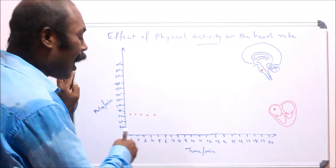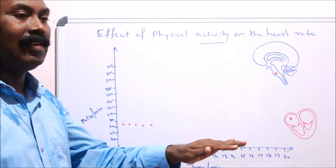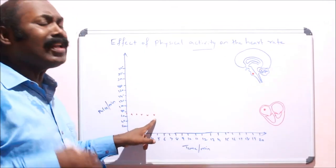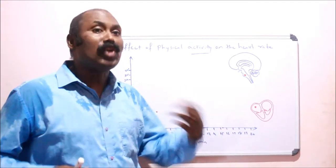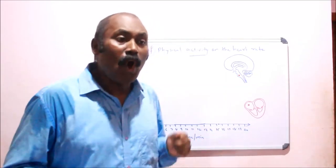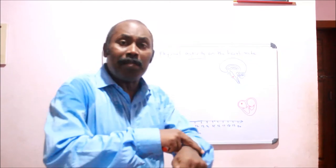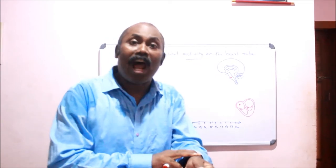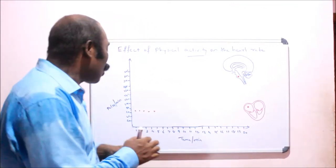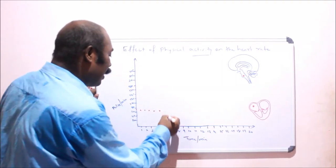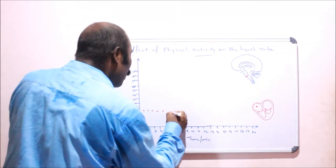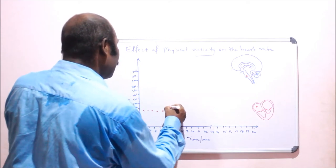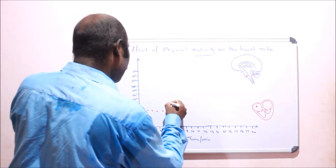After the fifth minute, you do on-spot jogging. After every minute of jogging, you check your pulse by placing three fingers of one hand on the radial artery of the other hand. You can see that from the sixth minute — when you started exercise — the heartbeat goes up and the pulse rate increases. By the sixth minute it has increased to 120.